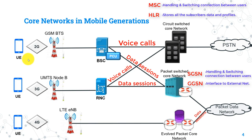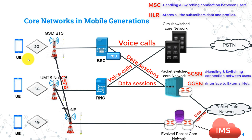In 4G, there is no connection to circuit switching networks, so voice calls are not enabled unless using one of two methods. The first is CS fallback, where a 4G subscriber needing to make a voice call falls back to the 3G or 2G network to use the CS network. The second is to connect the EPC with IMS, IP Multimedia System, which enables 4G subscribers to make voice calls over it. So any 4G network must have either CS fallback or an IMS network connected to it.